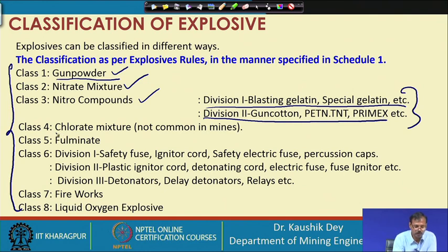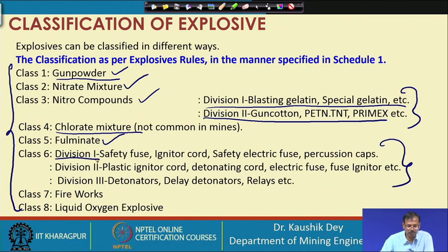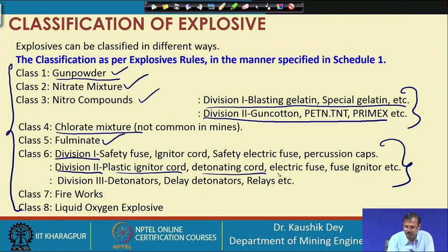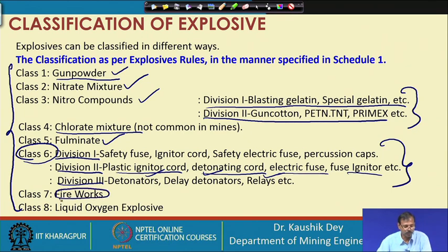Class 4 is chlorate mixture explosive, which is not very common in the Indian mining context. Class 5 is fulminate, also not common in the Indian mining sector. Class 6 is kept for accessories, again classified in 3 divisions: division 1 — safety fuse, igniter cord, safety electric fuse; division 2 — plastic igniter cord, detonating cord, electric fuse, fuse igniter; division 3 — detonator, delay detonator, and relays, which are used in surface blasting.